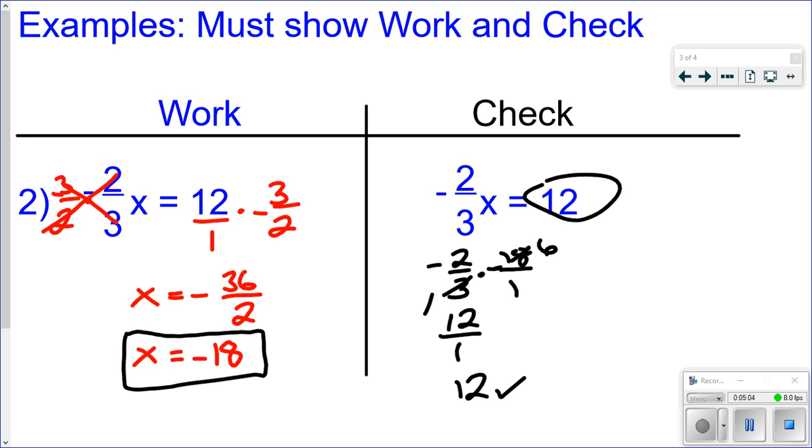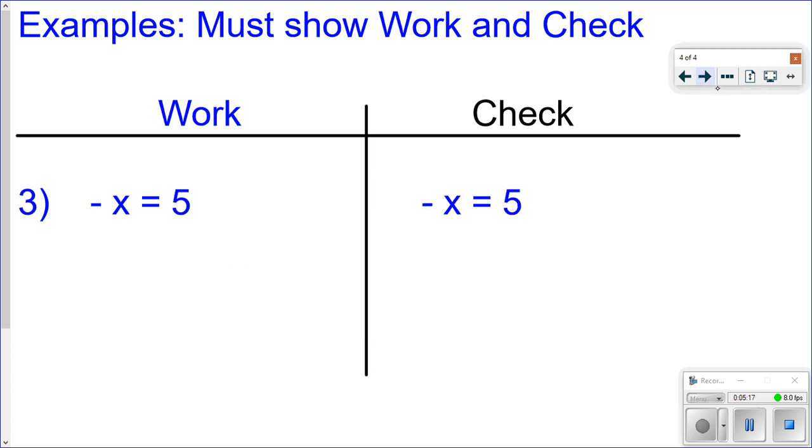So again, just in summary, when you have a fraction times the variable, you can get rid of that fraction by multiplying by its reciprocal. And that's called the multiplicative inverse. All right. So one other thing. This isn't really related here, but I wanted to throw this in here.